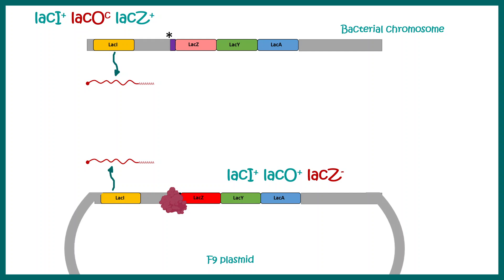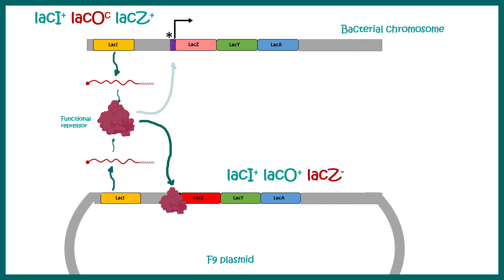After introducing the plasmid, both the chromosome and plasmid produce functional lac I, leading to functional repressor. This repressor tries to bind to the operator on the bacterial chromosome but cannot — the sequence is faulty. It then binds to the lac operator on the F' plasmid instead, so transcription from the F' plasmid is repressed. The constitutively active phenotype is not rescued, which tells the scientists the mutation was in the DNA binding sequence.